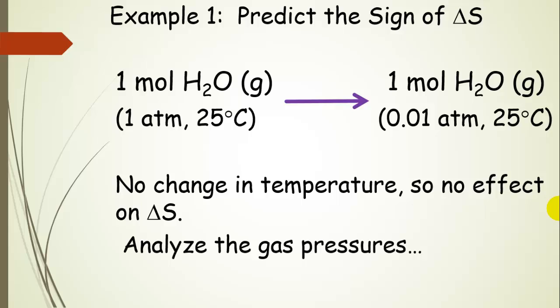Let's look at this process where we have one mole of gaseous water, and it's at one atmosphere and 25 degrees C, so one atmosphere of pressure. We are going to allow it to go through the process where we have the same mole of water, but now it's at a pressure of 0.01 atmospheres, but still at the same temperature.